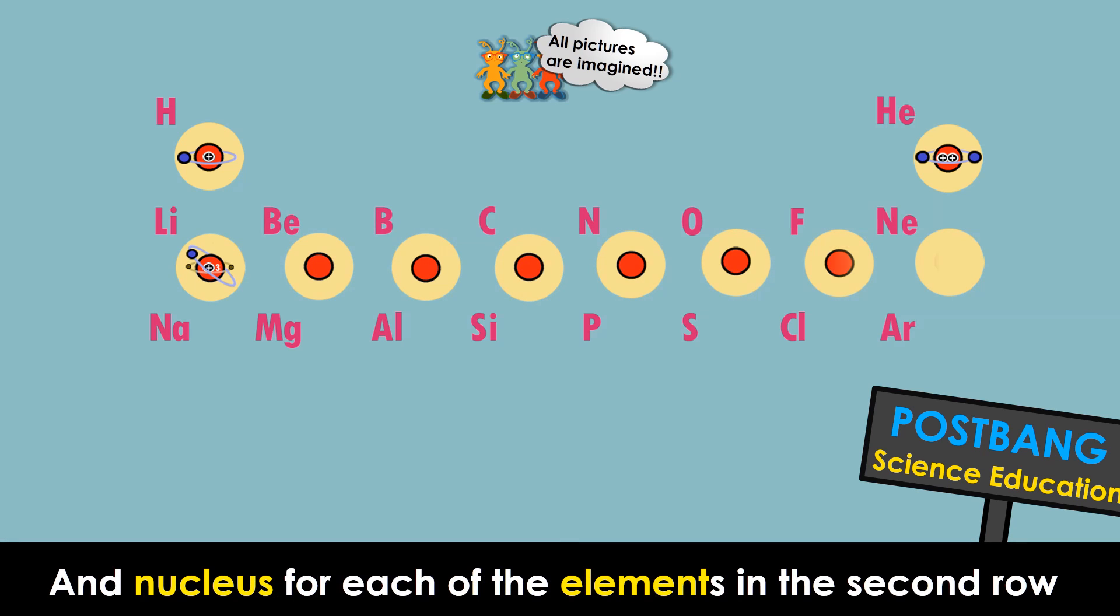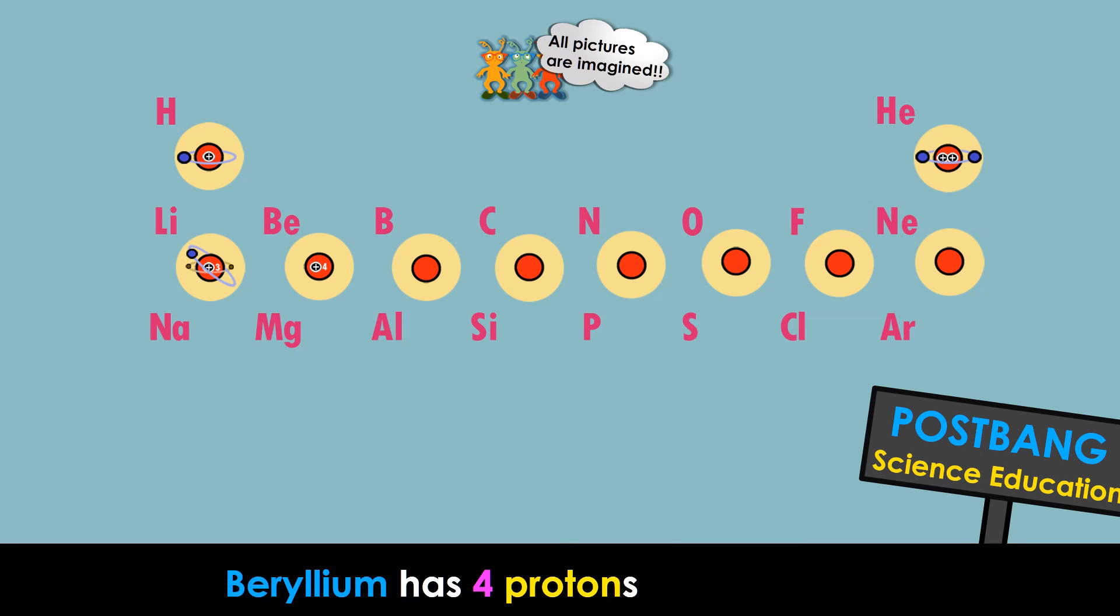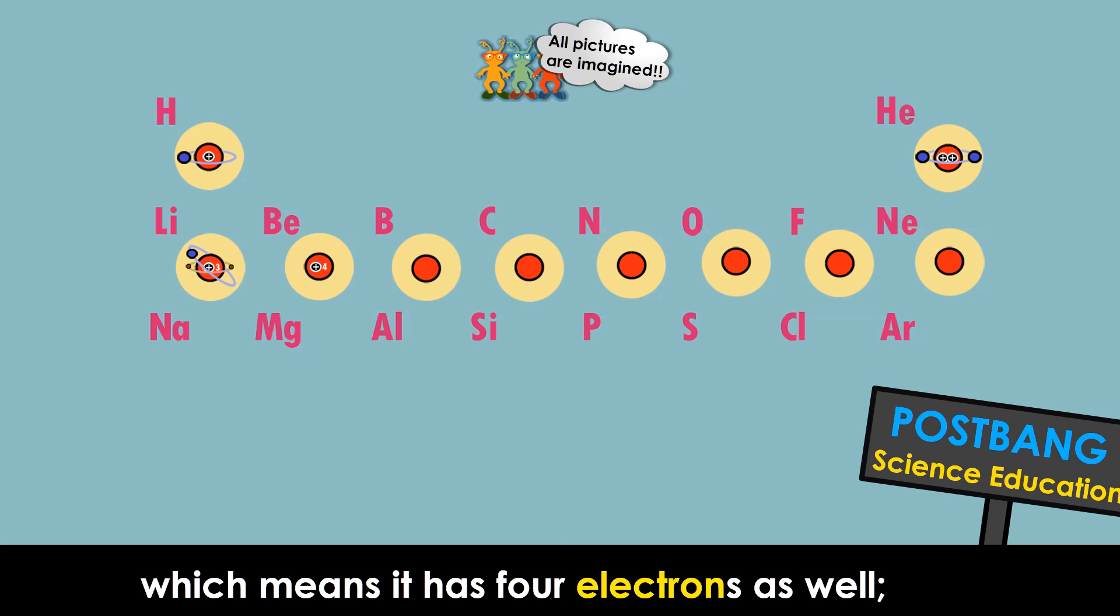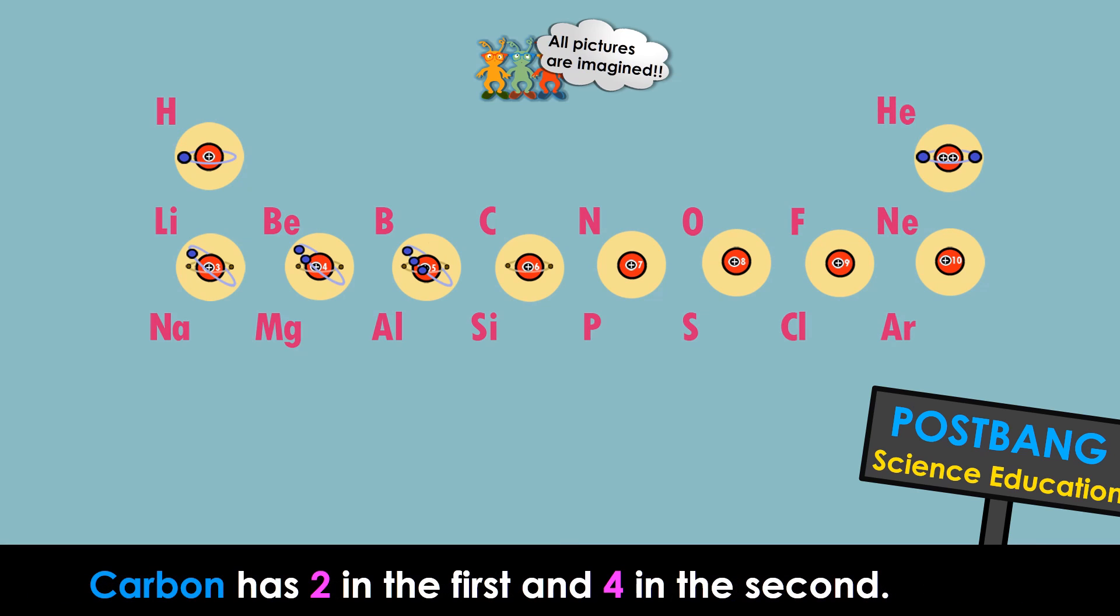And a nucleus for each of the elements in the second row, including beryllium, the fourth element. Beryllium has four protons, which means it has four electrons as well. Two in the first orbital and two in the second orbital. Boron has two in the first orbital and three in the second orbital. Carbon has two in the first and four in the second.